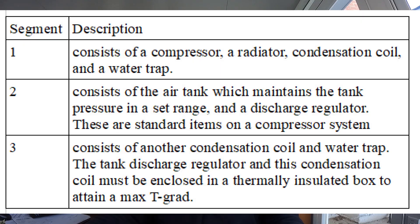The first segment consists of a compressor, a radiator, condensation coil, and a water trap. Segment two consists of the air tank which maintains the tank pressure in a set range and a discharge regulator — these are standard items on a compressor system. And segment three consists of another condensation coil and water trap. The tank discharge regulator and this condensation coil must be enclosed in a thermally insulated box to attain and maintain a max temperature gradient. So let's look at a schematic of such a system.